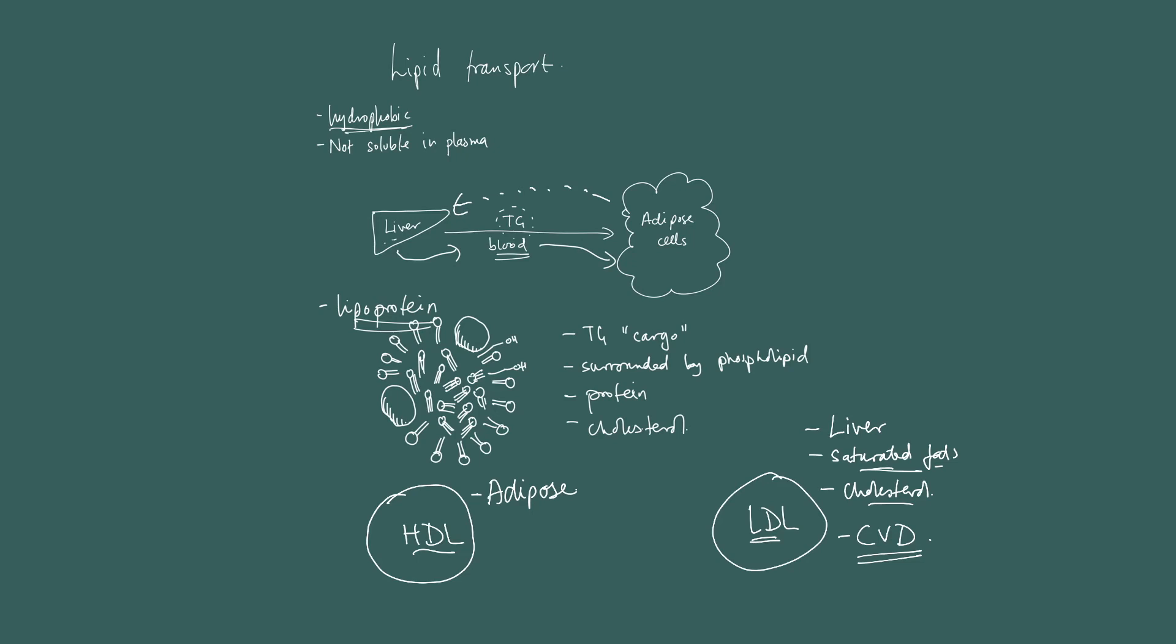Adipose tissues produce HDLs to mobilize fats to be used up, whereas liver is producing LDLs to essentially store fat. Adipose is basically mobilizing fat to be used up. HDL has relatively less saturated fat and therefore higher unsaturated fat. It's got a greater proportion of protein and less cholesterol.